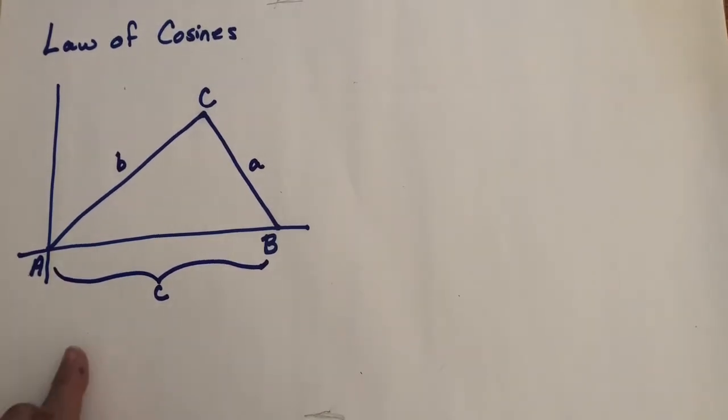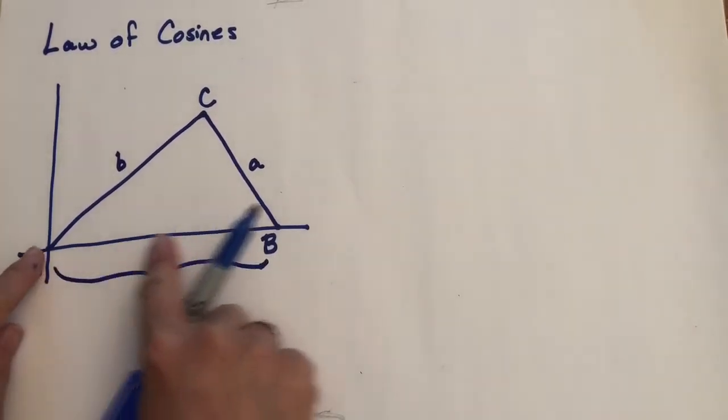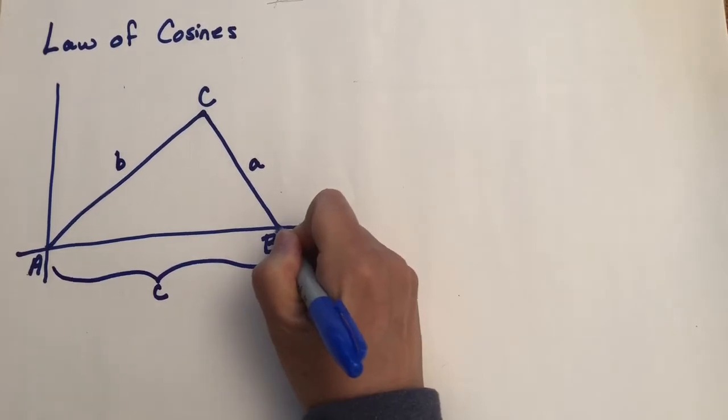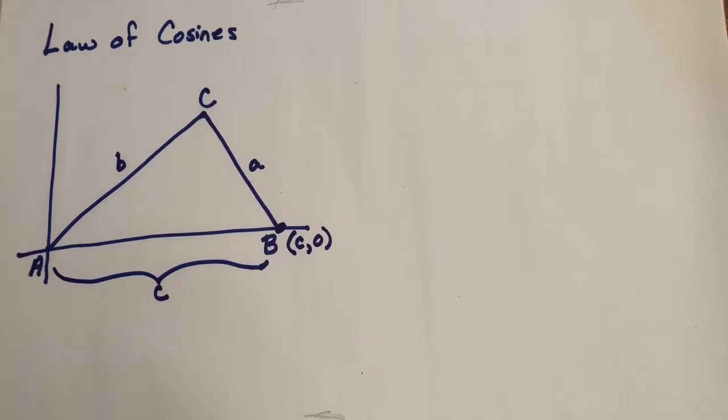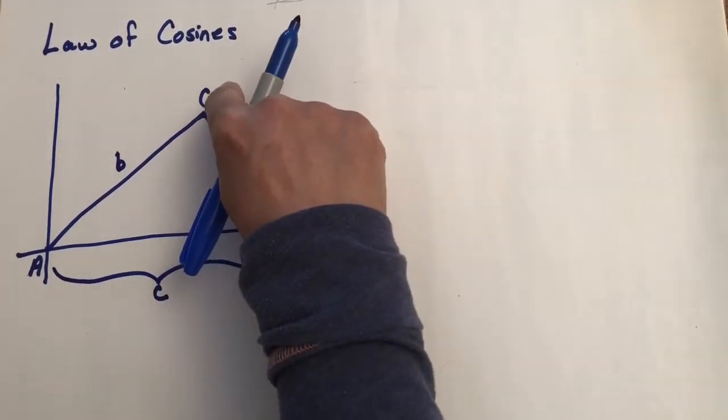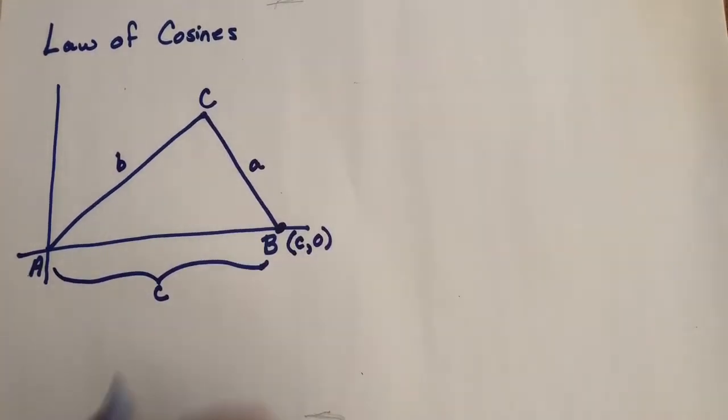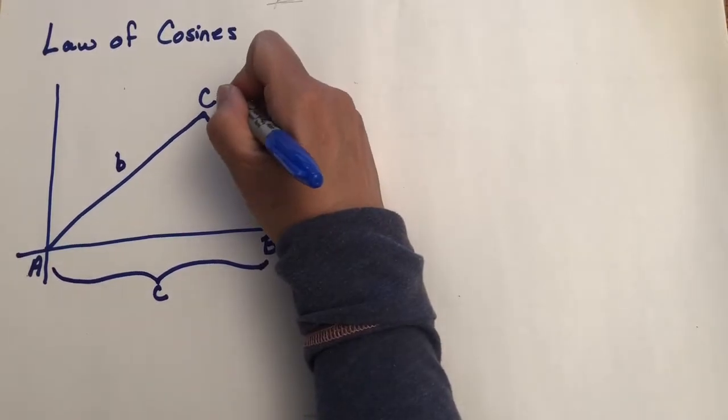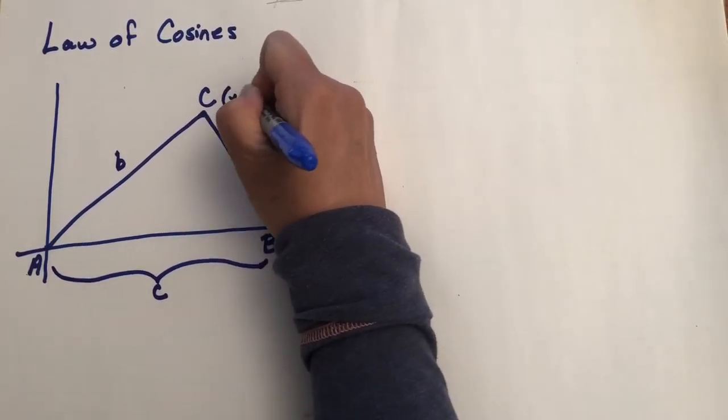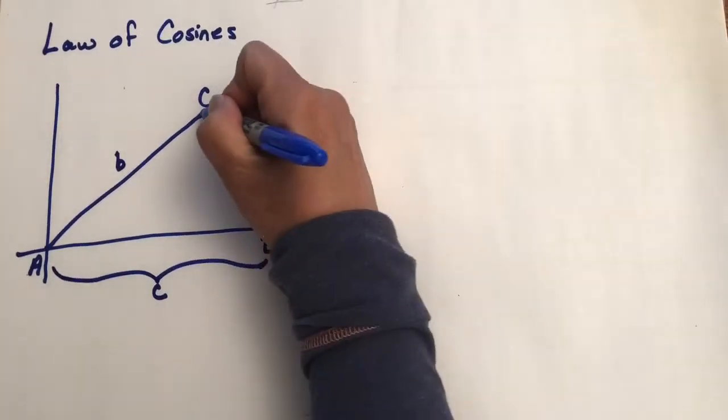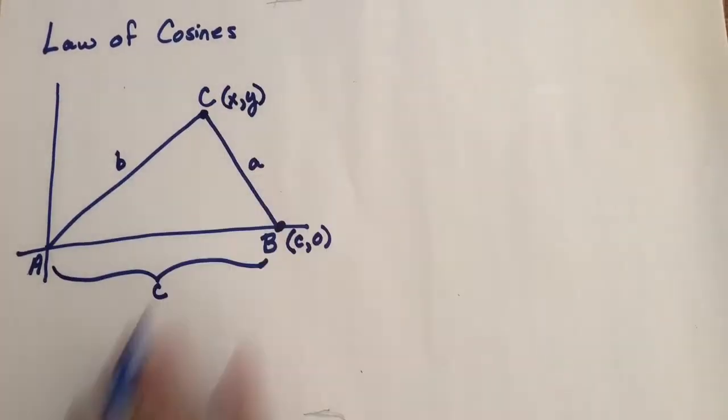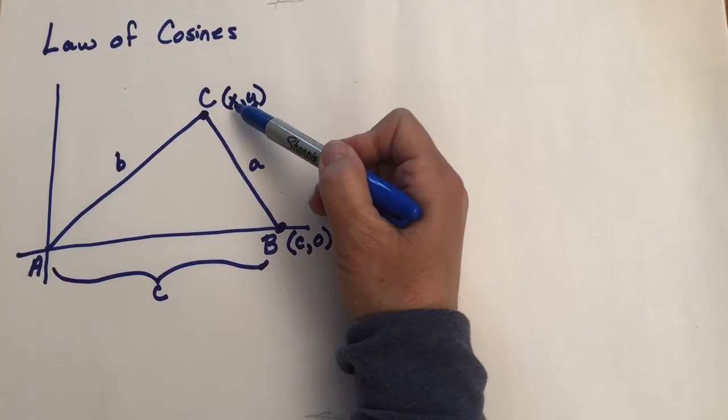Let me label some ordered pairs. If this length is C, then this point right here could be considered C,0. Now this point up here, I just want to call it X,Y. I don't know where it is, except that it's up here in the first quadrant. So it's just sort of a generic X,Y.